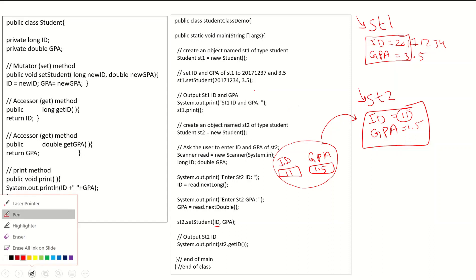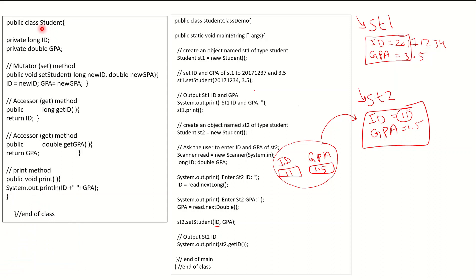Always start with your class. For class Student, any members like ID, name, GBA, address, major should always be declared as private: give the data type and then the name. Then always have a set method and a get method. The set method is always void and public: public void setStudent, or setData, or any name. The parameters should match the private members — for example, long newID and double newGBA, and if there is also a name, add String newName.